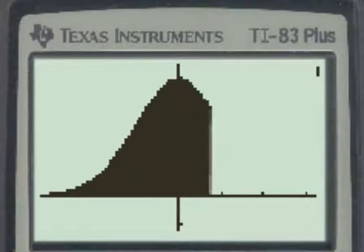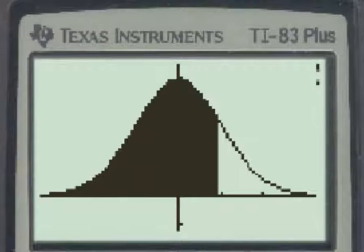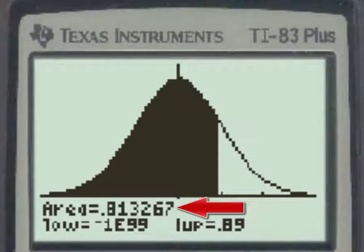When we hit the enter key, the graph is drawn and we see the area as our answer. We will round this to four decimal places, giving us 0.8133.